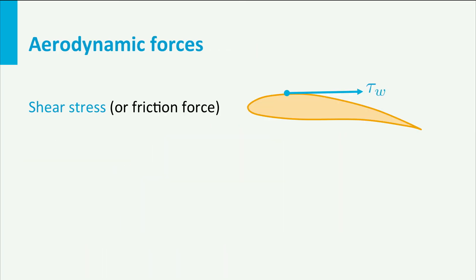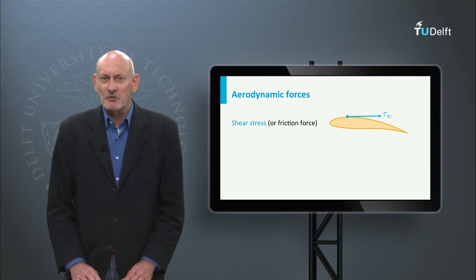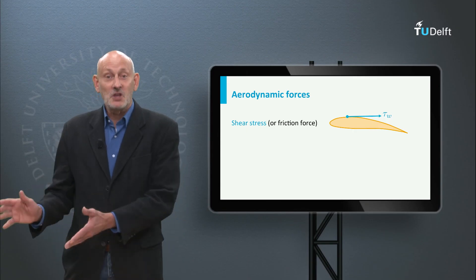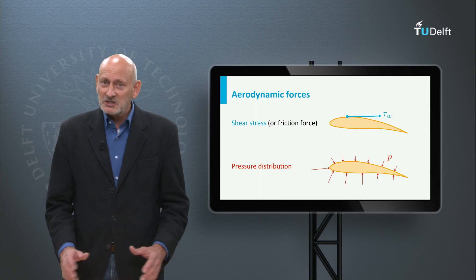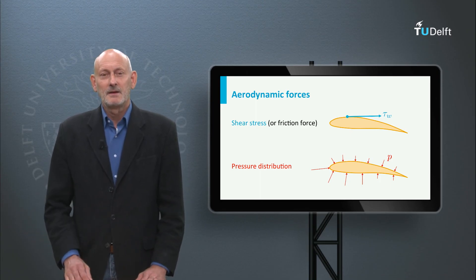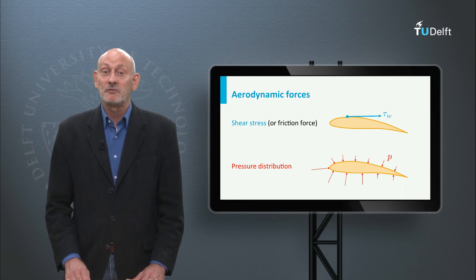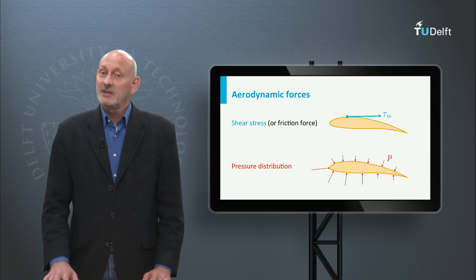When we put an object in the flow, such as an airfoil, two types of forces can be identified. First of all, fluid particles experience a friction force as they move over the surface of the object. Secondly, since the object displaces the fluid, the object will feel pressure forces that also vary over the airfoil surface. The next lecture deals with two fundamental equations for the flow of fluids: the continuity equation and the Euler equation.